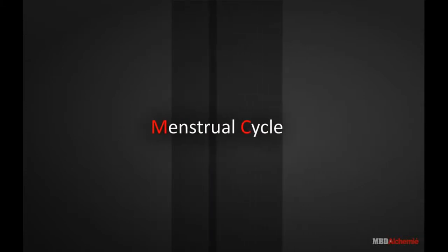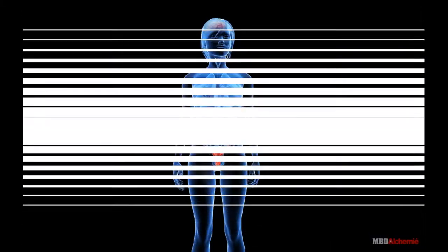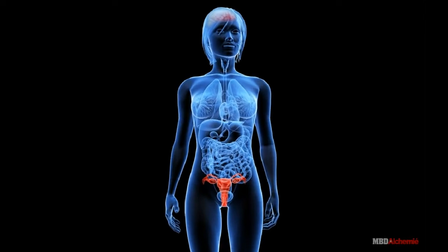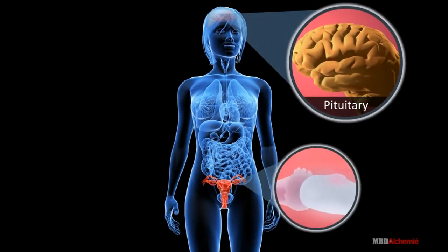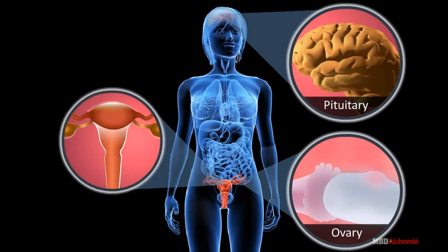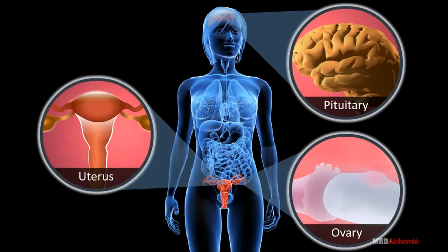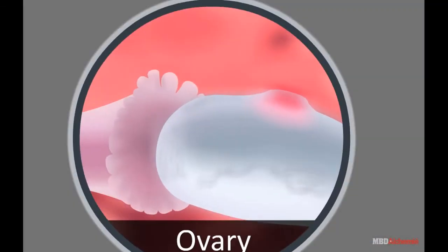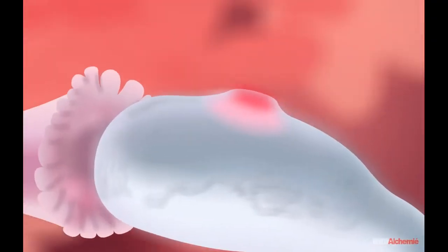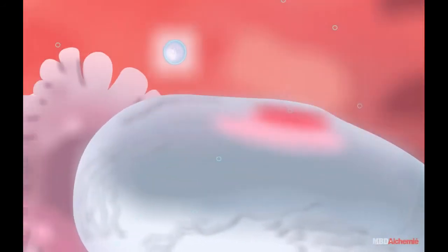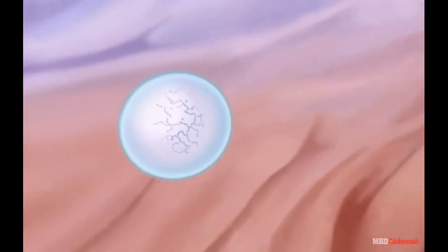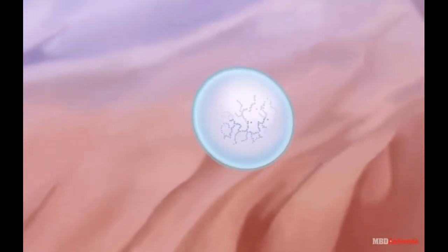Menstrual Cycle. The reproductive period of the human female extends from puberty to menopause. During this reproductive period, ovaries and the female reproductive tract undergo a series of cyclic changes which are primarily meant to prepare them for fertilization and pregnancy, and collectively form the menstrual cycle.